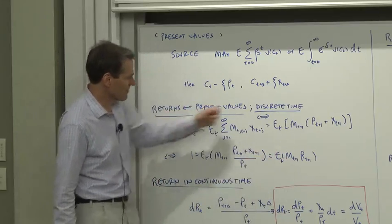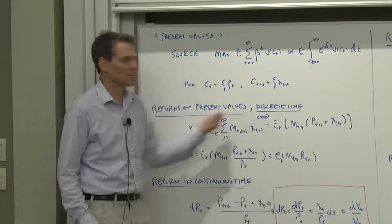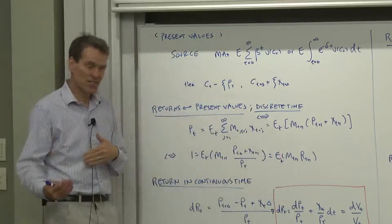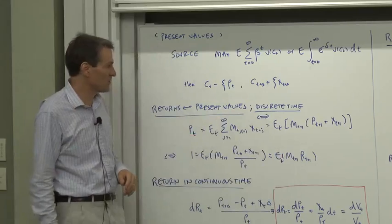So you can go from present values to return relationship, and backwards, you can accumulate the return relationship to find the present value formula. One's just the difference of the other, one's the integral of the other, with quotes around that difference and integral.